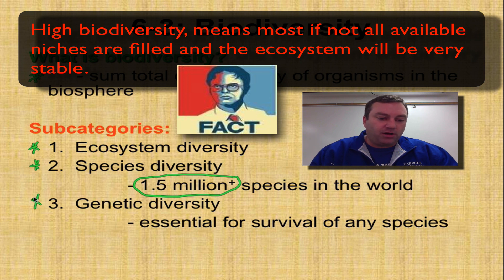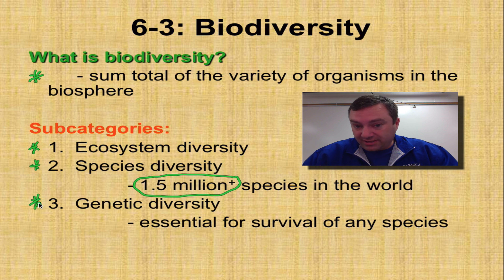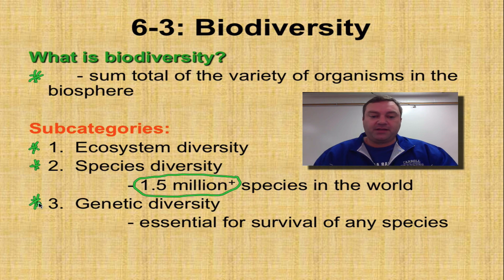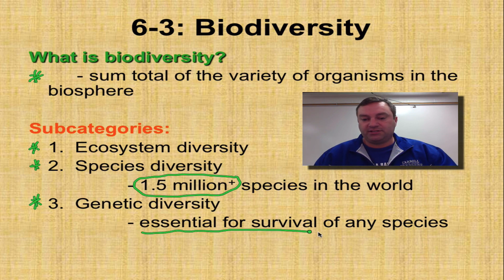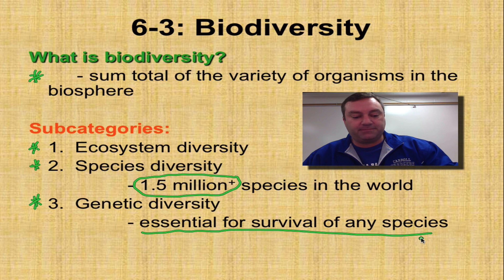Obviously, all living things have a genetic code, so the more living things that you have — in other words, the more and greater variety of species — the more and greater variety of genes you're going to have on the planet. And remember, genetic diversity is essential for the survival of any single species, including human beings.